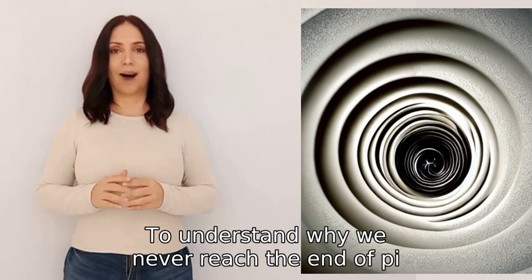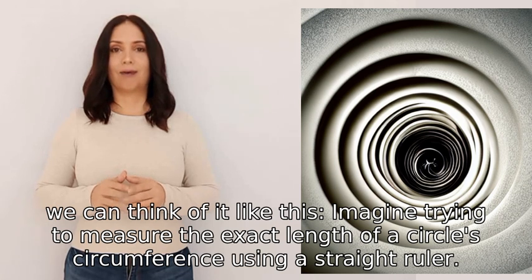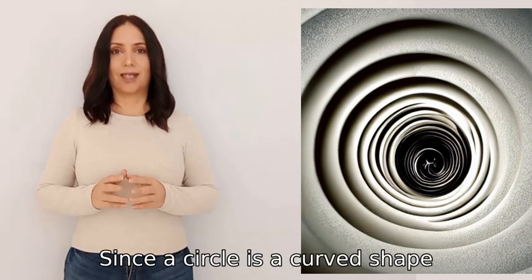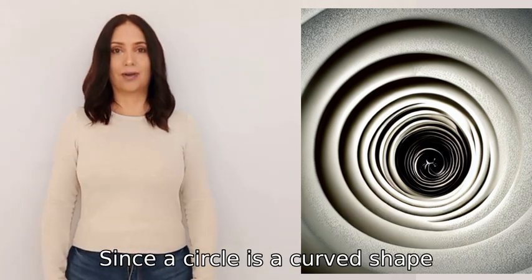To understand why we never reach the end of pi, we can think of it like this: imagine trying to measure the exact length of a circle's circumference using a straight ruler. Since a circle is a curved shape, the ruler will always fall short or go beyond the true measurement.